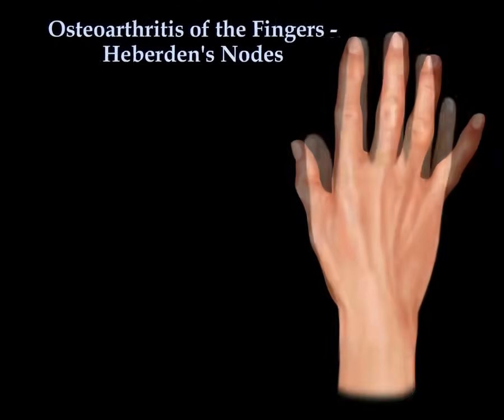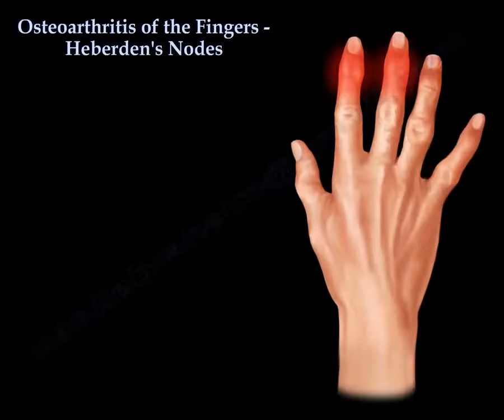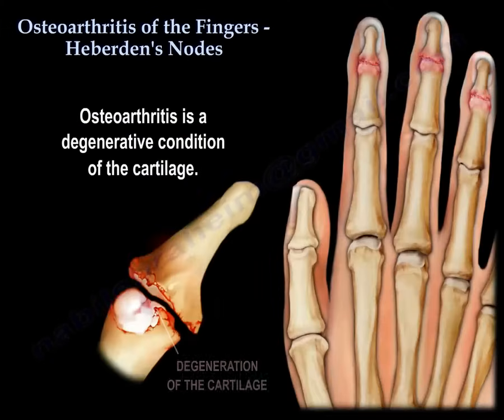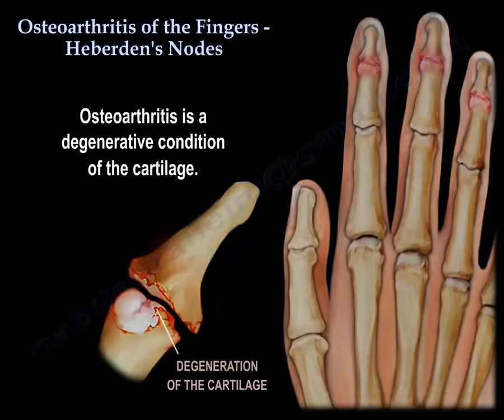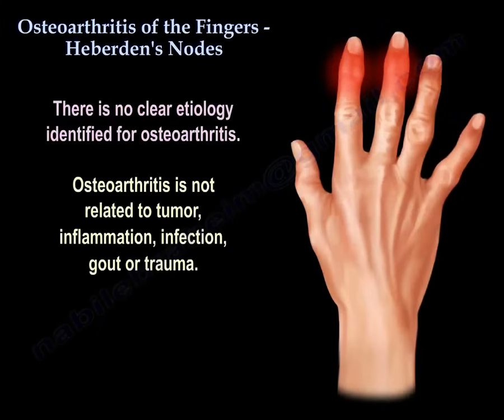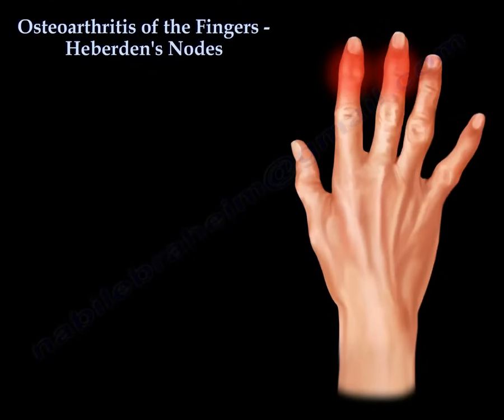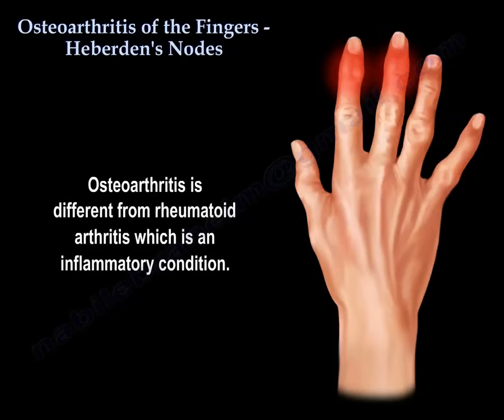Osteoarthritis of the fingers and Heberden's nodes. Osteoarthritis is a degenerative condition of the cartilage. There is no clear etiology identified for osteoarthritis. Osteoarthritis is not related to tumor, inflammation, infection, gout, or trauma. Osteoarthritis is different from rheumatoid arthritis, which is an inflammatory condition.